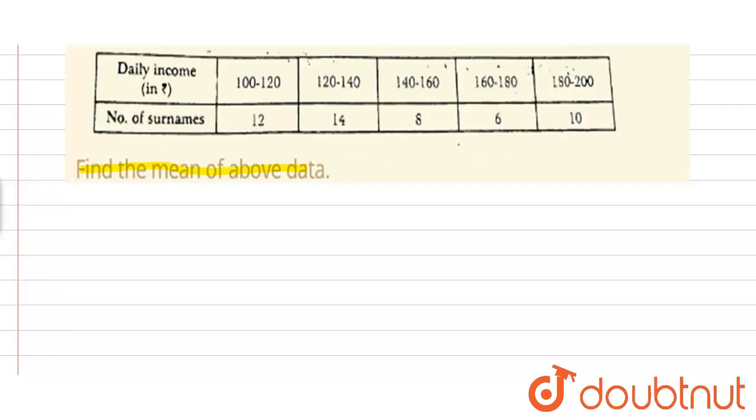So to find mean first we have to draw this table in which daily income is 100 to 120, 120 to 140, 140 to 160, 160 to 180 and 180 to 200. And number of surnames, which is fi, is 12, 14, 8, 6 and 10.